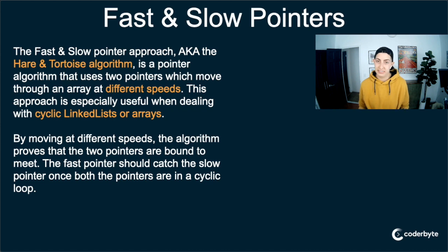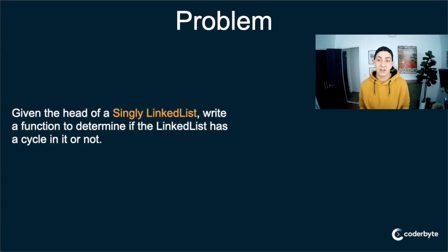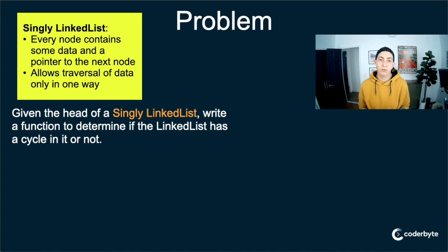Today we're going to write a function to find a cycle, if there is one, in a linked list. Given the head of a singly linked list, write a function to determine if the linked list has a cycle in it or not. A singly linked list — every node contains some data and a pointer to the next node, and it only allows traversal of the data in one direction. Every node only has a pointer to its next node; you can never go backwards.